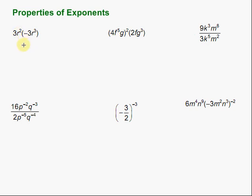For this first one, we've got 3r squared times negative 3r cubed. It's important to notice that we're just multiplying. It's written in parentheses so that the negative is with the 3 clearly, but it's just multiplication. So we can multiply the 3 times the negative 3 to give us negative 9. And then if we combine those r terms, remember if we're multiplying terms that have the same base, we're going to add the exponents. So r squared times r cubed gives us r to the fifth power.